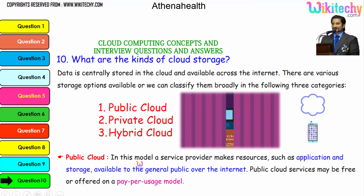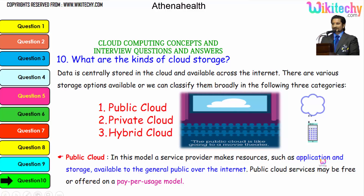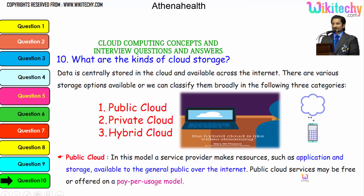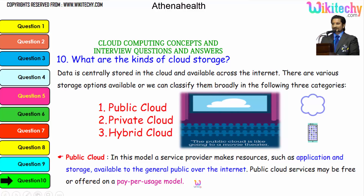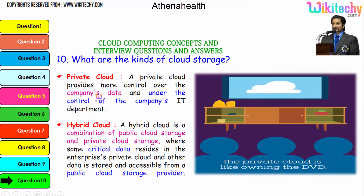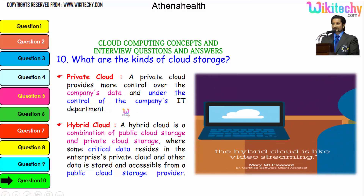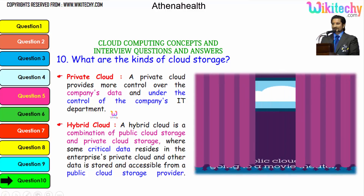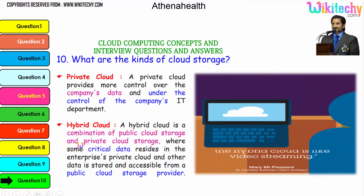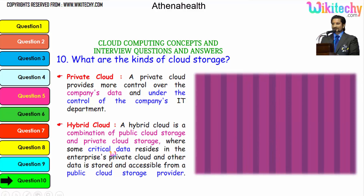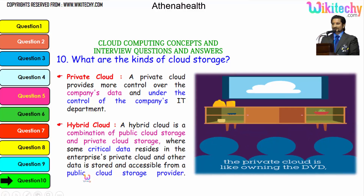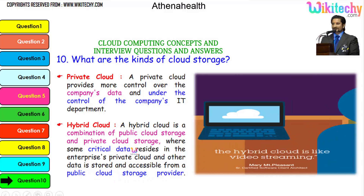In the public cloud model, a service provider makes resources such as applications and storage available to the general public over the internet. Public cloud services may be free or offered on a pay-per-usage model. Private cloud provides more control over company data, under the control of the company's IT department — it is really private to you. Hybrid cloud is a combination of public and private cloud storage, where some critical data resides in the enterprise private cloud and other data is stored and accessible from a public cloud storage provider.